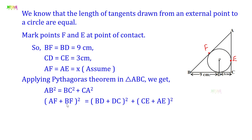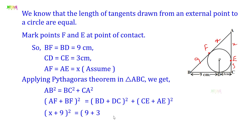Now substituting values: AF is X, BF is 9, so AB equals X plus 9. BD is 9, DC is 3, so BC equals 9 plus 3 equals 12. CE is 3 and AE is X, so CA equals 3 plus X. Therefore the equation becomes: X plus 9 whole square equals 12 whole square plus 3 plus X whole square.